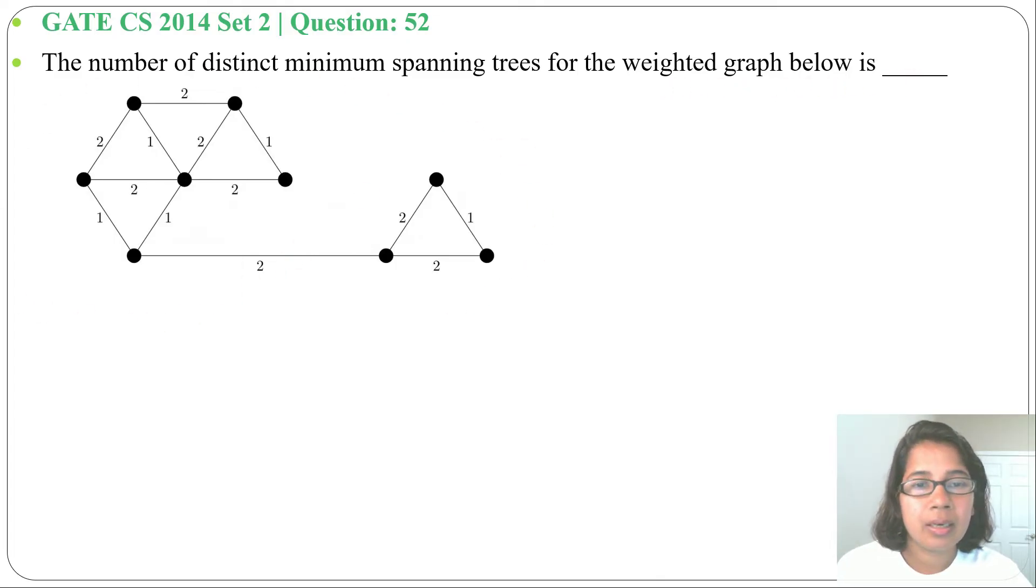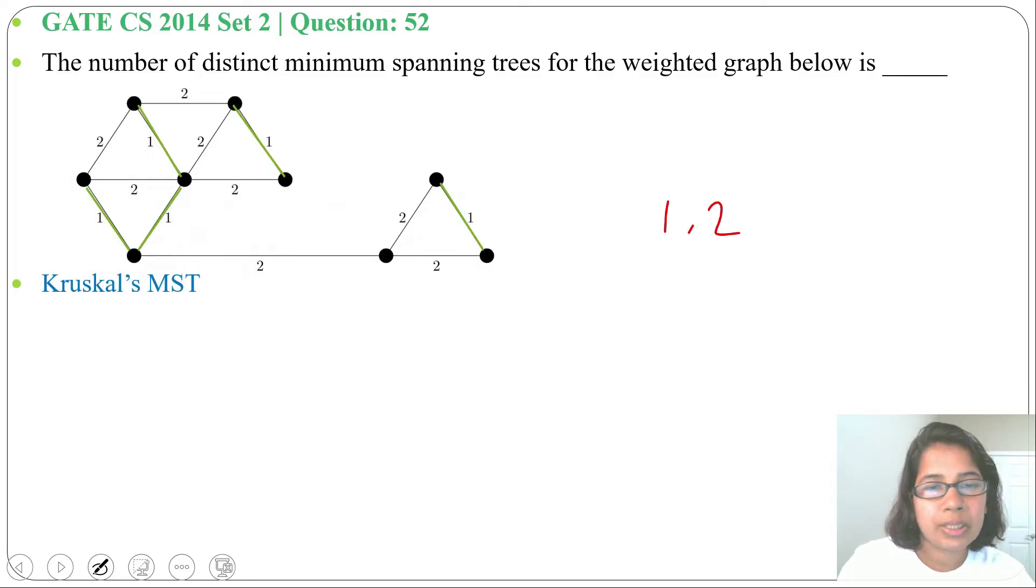Let me apply Kruskal's algorithm for finding minimum spanning tree here. Weights of the edges are 1 and 2, so first I'll choose all the 1s. So 5 ones are there and we select all 1. Next we'll choose 2.